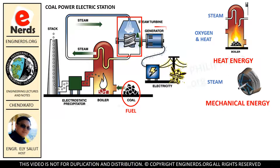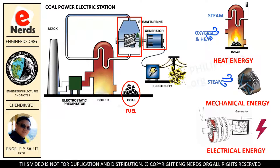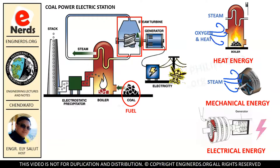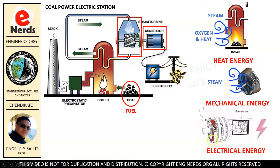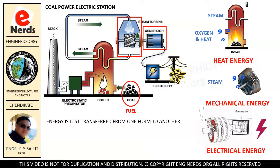Next in our diagram is the generator. Our turbine rotates the generator, which eventually produces electricity — a form of electrical energy. As you can see, there are changes in forms of energy. There is no loss of energy, but rather it is being transferred or converted into another form — from heat energy in the boiler, to mechanical energy in the turbine, and finally to electrical energy in the generator. Energy is just transferred from one form to another.